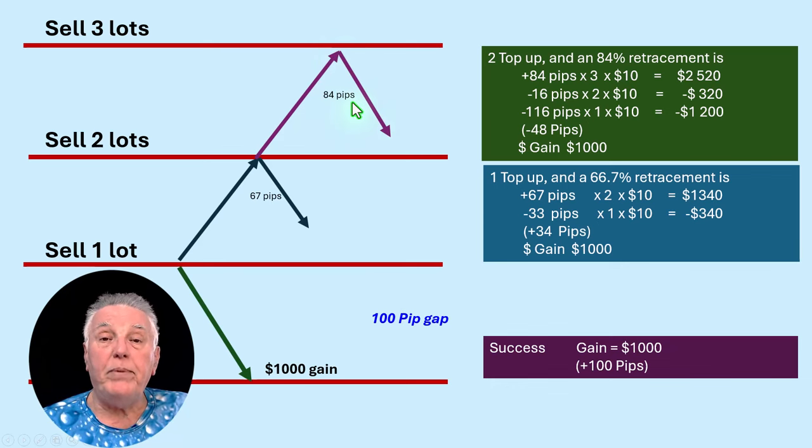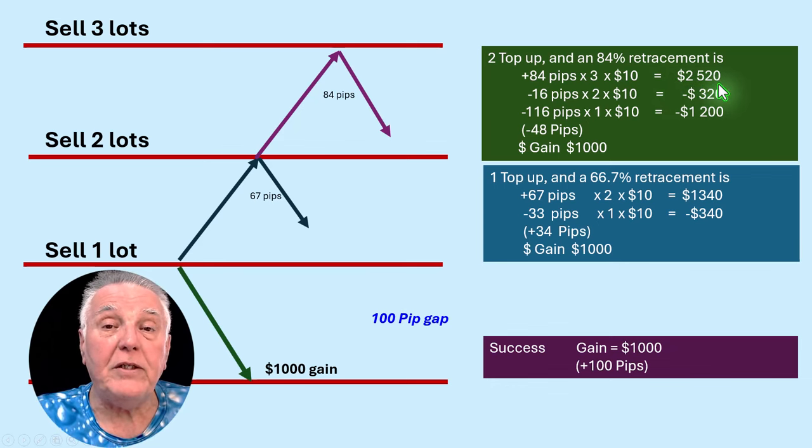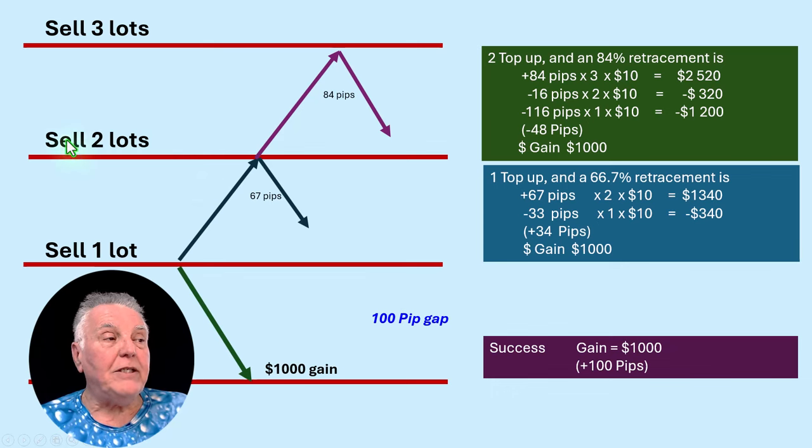And this time at three lots for this particular transaction. And again, for argument's sake, let's say that the price went down 84 pips. So what then happens is that 84 pips times three lots times $10 is $2,520.